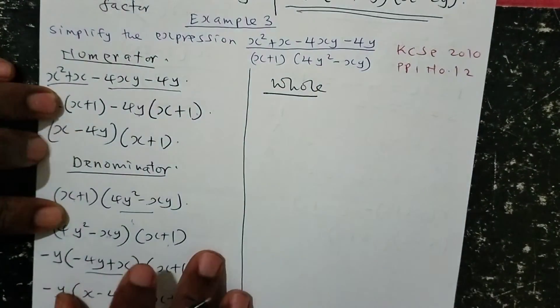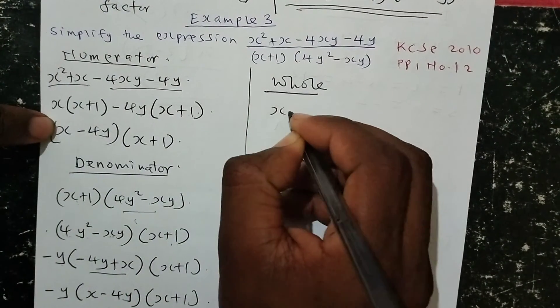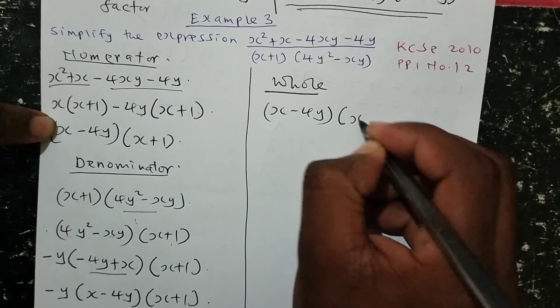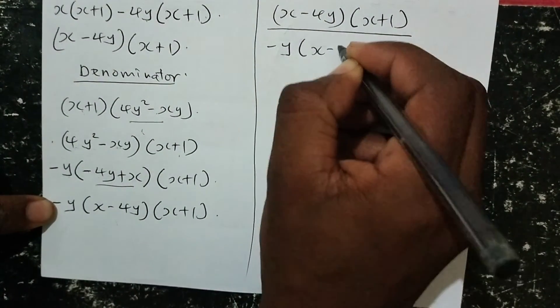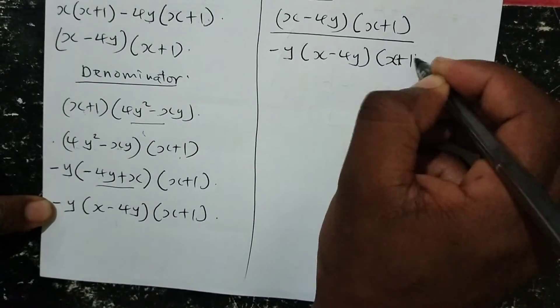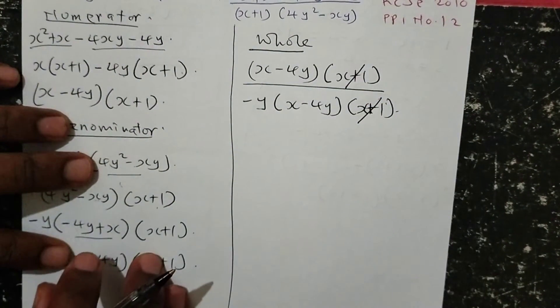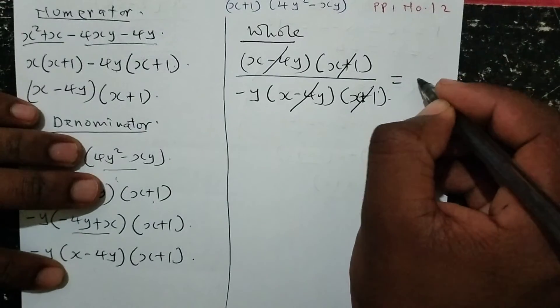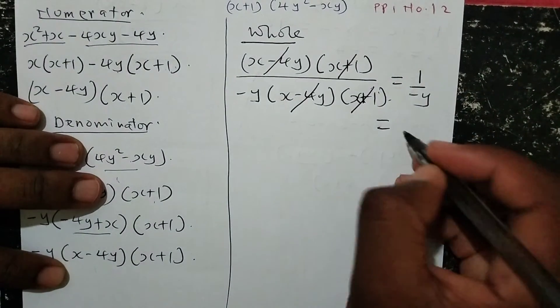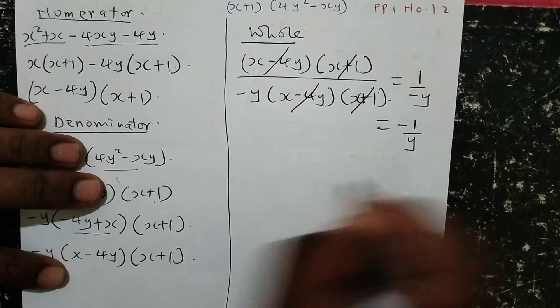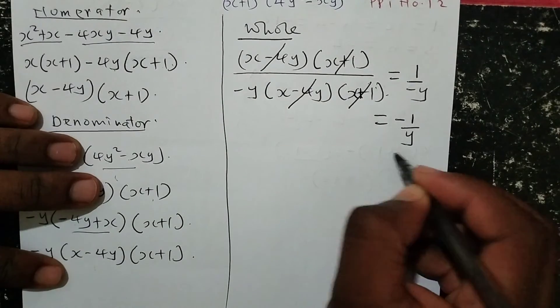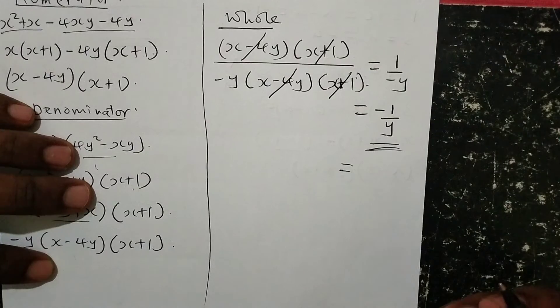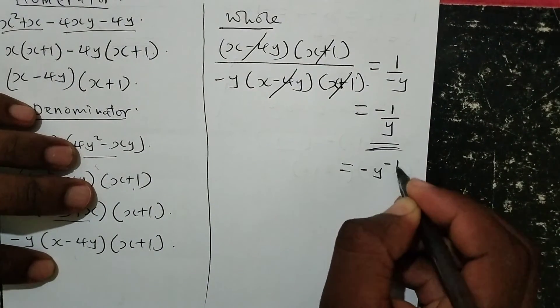Once both numerator and denominator are simplified, I combine the whole sum. The numerator is x minus 4y times x plus 1, divided by the denominator negative y times x minus 4y times x plus 1. X plus 1 and x plus 1 cancel; x minus 4y and x minus 4y cancel. The final answer is 1 over negative y, which is the same as negative 1 over y. This can also be written following the laws of indices as negative y to the power of negative 1.